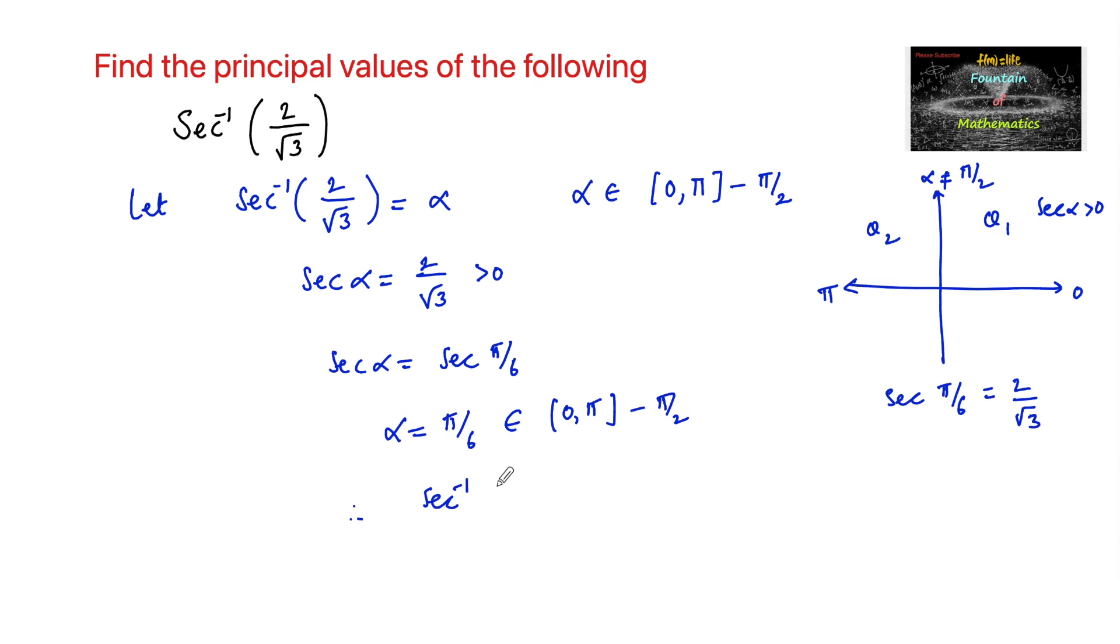Therefore, the principal value of secant inverse of 2 by root 3 is equal to π by 6.